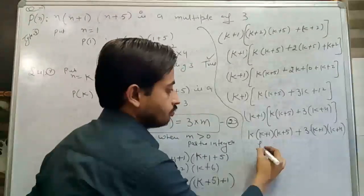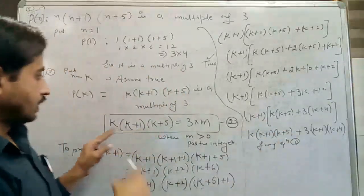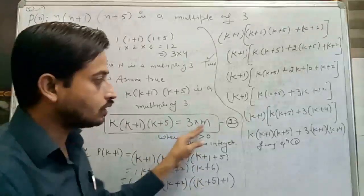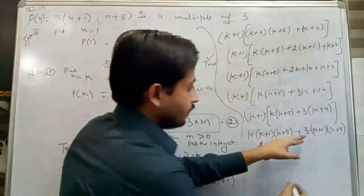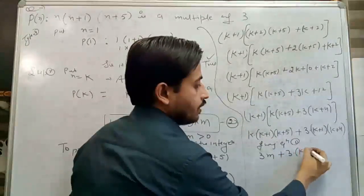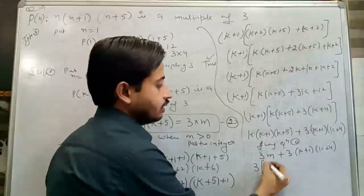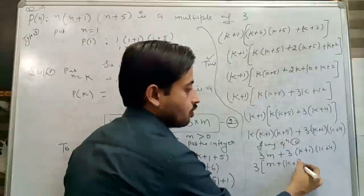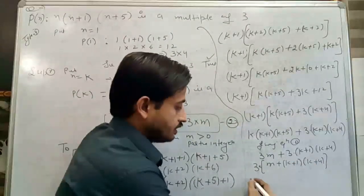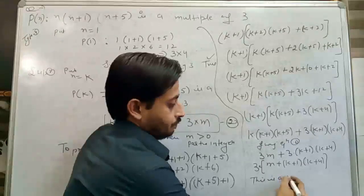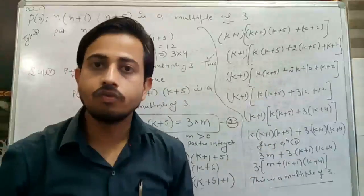Substituting from equation 2 where k(k+1)(k+5) = 3m: P(k+1) = 3m + 3(k+1)(k+4) = 3[m + (k+1)(k+4)]. This clearly shows it is a multiple of 3, which is what we had to prove. Hence proved.